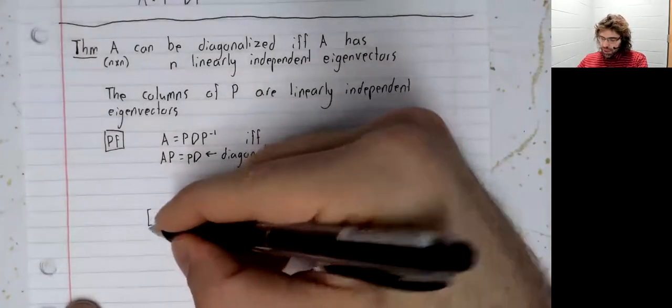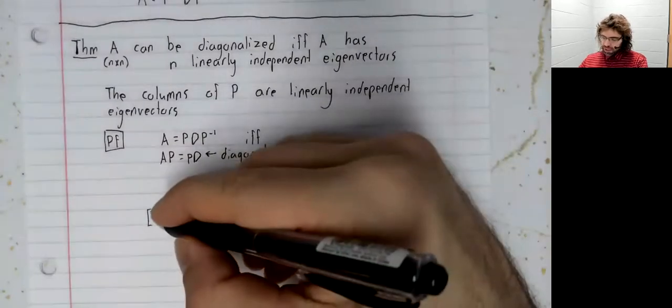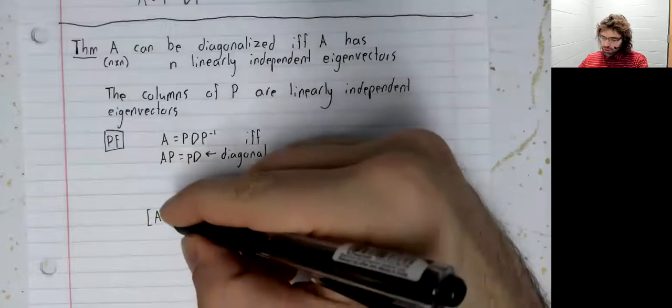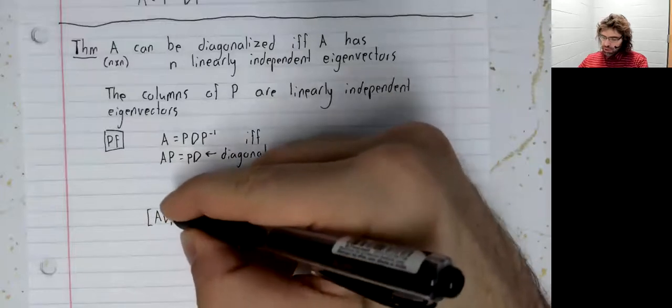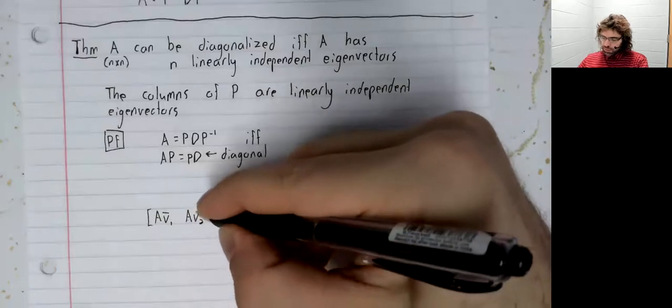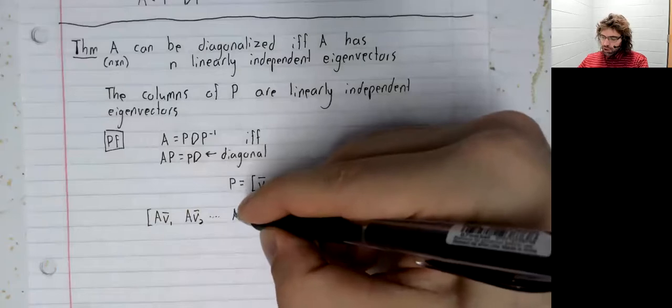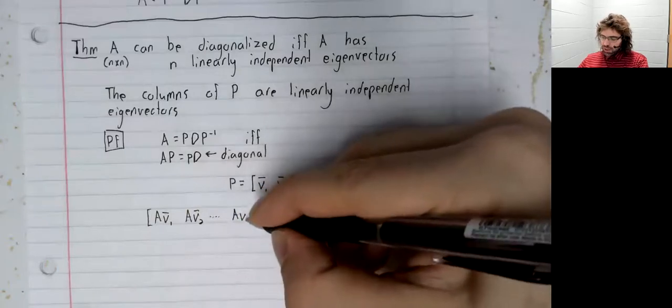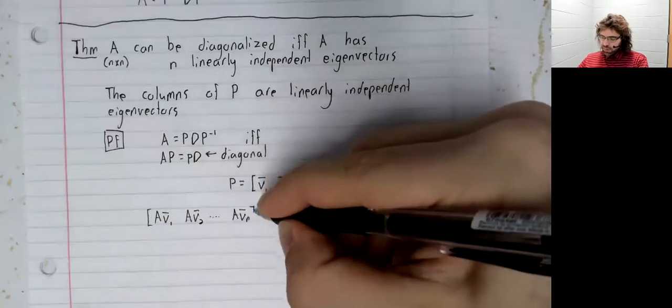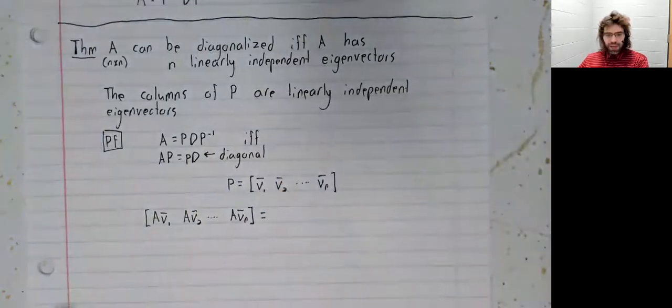By the way we defined matrix multiplication all those weeks ago, is this: We take all the columns of P and multiply them by A.